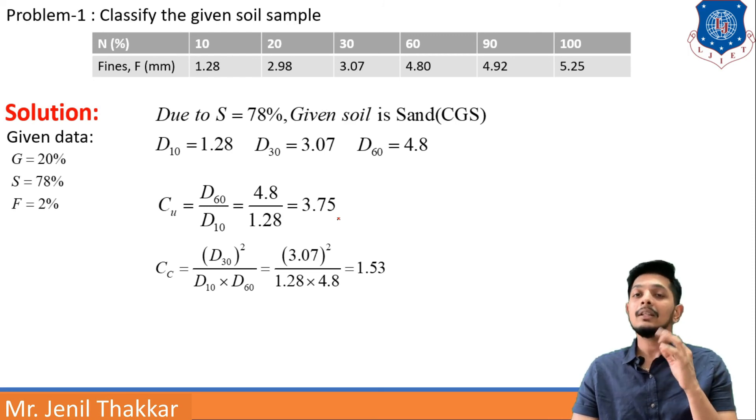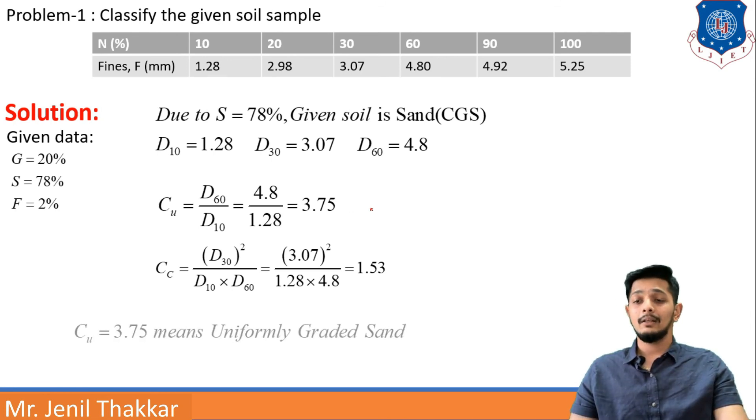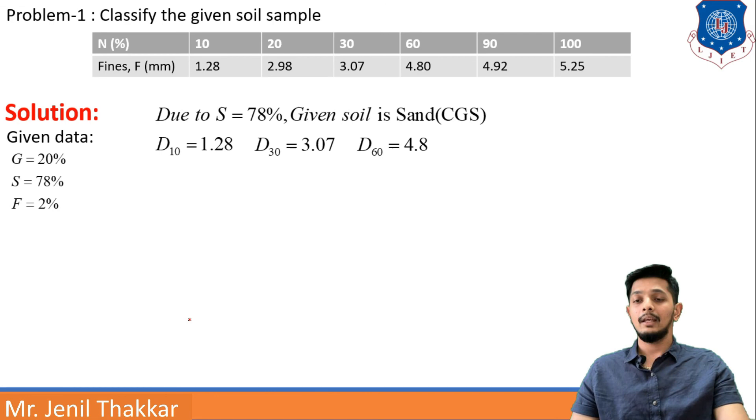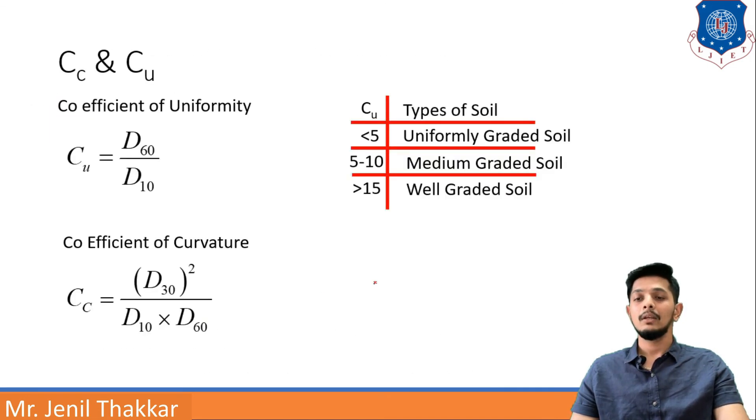What are the ranges of Cu and Cc that will decide its gradation. So if I recall Cu, Cu is 3.75 means it is uniformly graded sand. If I go back and if I see table of Cu, then Cu is 3.75 which is less than 5 then it will be a uniformly graded soil.